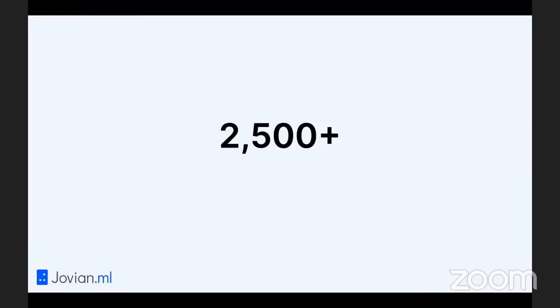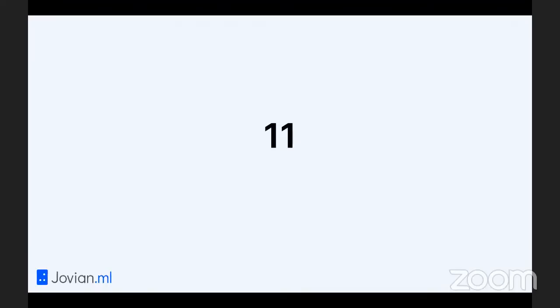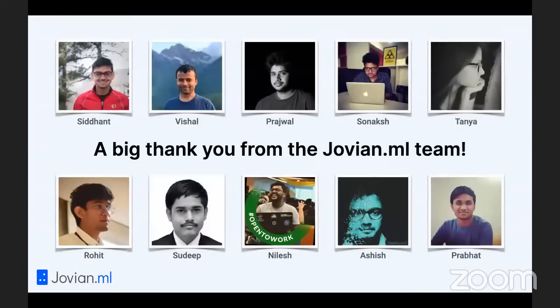Finally, the number we've been waiting for: we have more than 2,500 graduates so far, and we are still evaluating some projects and resubmissions. Out of 16,000 enrolled, 2,500 people have graduated. Congrats if you've made the cut, and if you haven't, you still have a chance over the next week or two. This was a truly global community — participants from over 170 countries — and the course team is 11 people. On behalf of the entire Jovian.ml team, a big thank you to all of you for making this a great success.